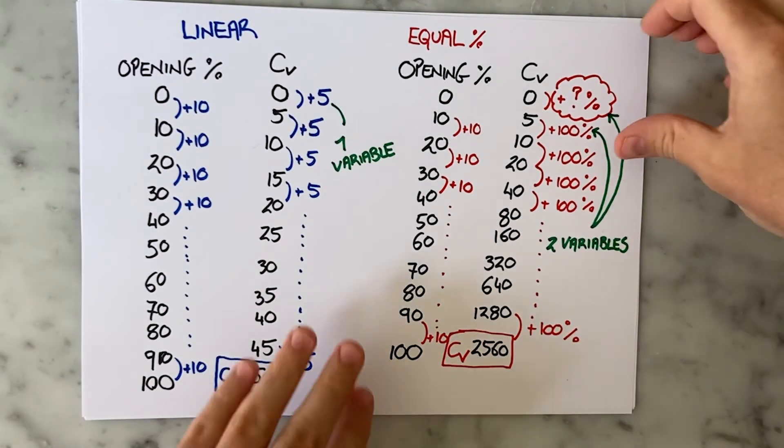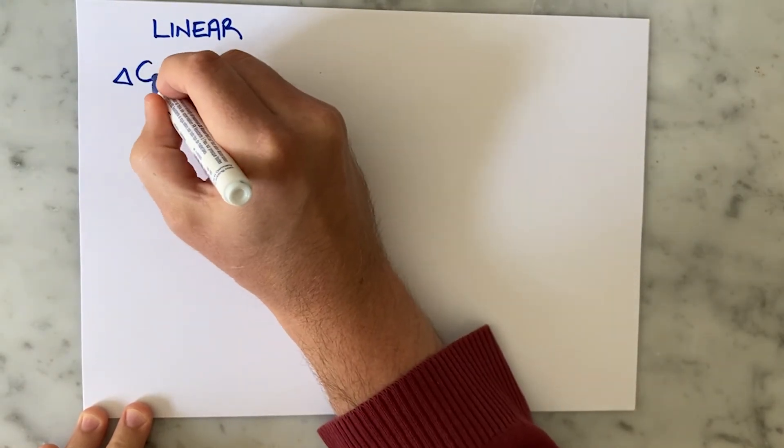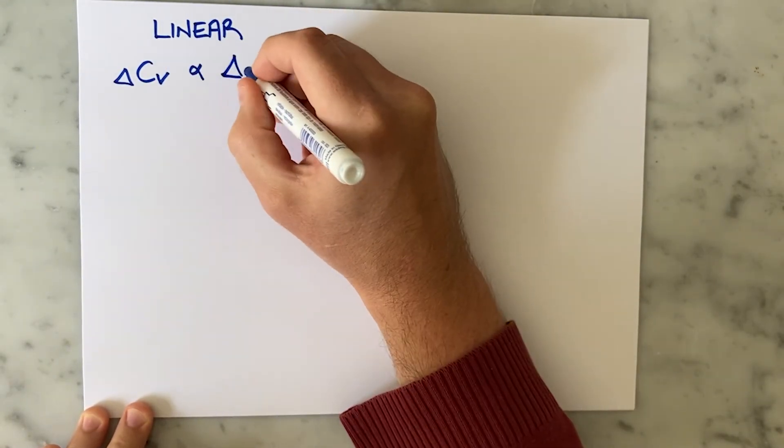It is relatively quick to derive the equation of the equal percentage valve, but it may help understanding the derivation if we start by deriving the equation of the linear valve even though it seems a little bit pointless.